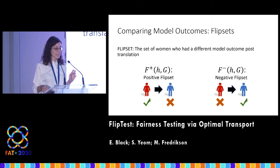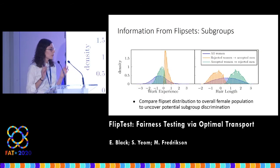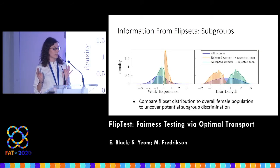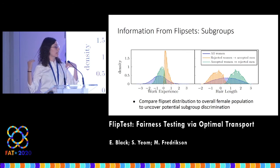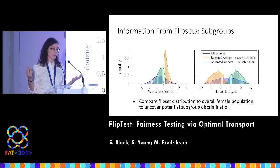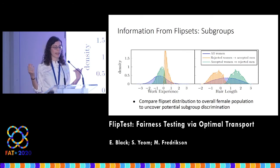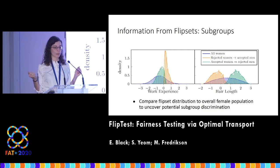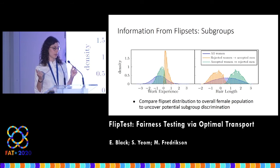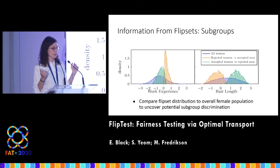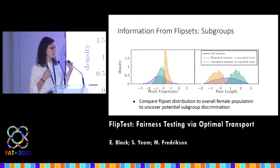One way that we uncover potential discrimination is by looking at subgroup discrimination — examining how the distribution of the subgroups differs from the overall distribution of the population. This is shown for each feature: work experience and hair length.